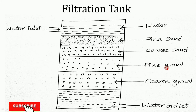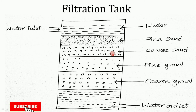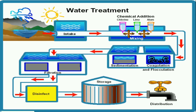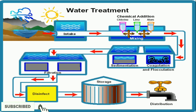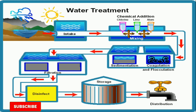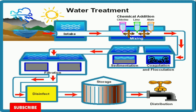After the filtration tank, the water is sent into the disinfection tank. In the disinfection tank, we kill microorganisms using chemical processes. It is a process of destroying harmful bacteria, known as disinfection. The following methods can be used.